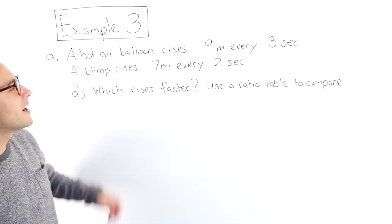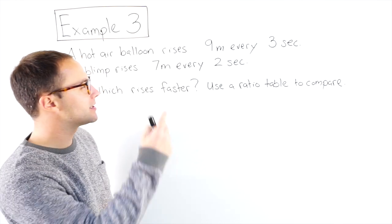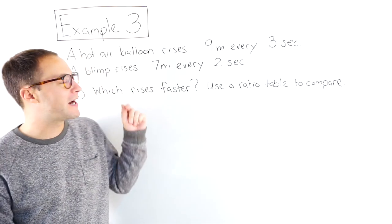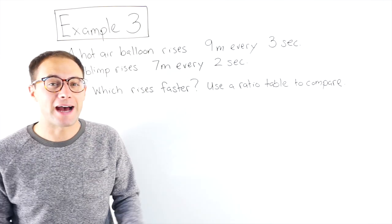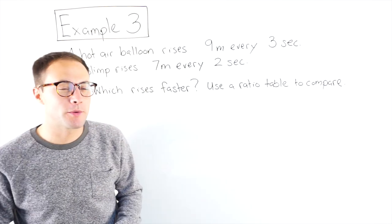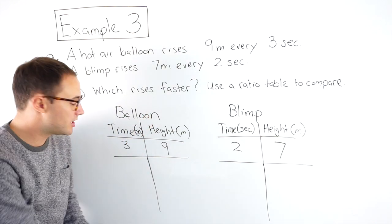Example three, a hot air balloon rises nine meters every three seconds. A blimp rises seven meters every two seconds, which rises faster. Use a ratio table to compare.